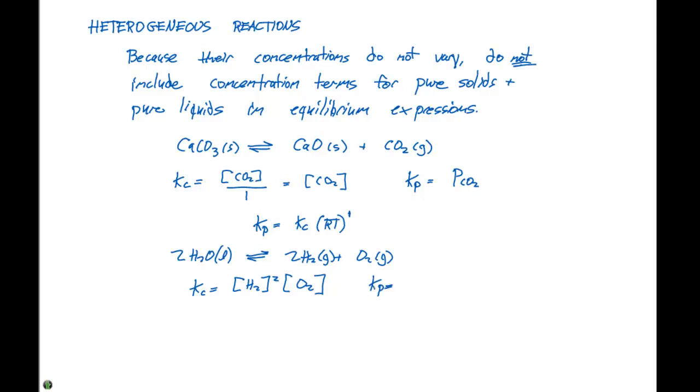Likewise, the Kp is the partial pressure of H2 squared times the partial pressure of O2. The Kp equals Kc times RT to the delta N. On the product side, we have three moles of gas; on the reactant side, we have zero. So it's Kc times RT raised to the third power.